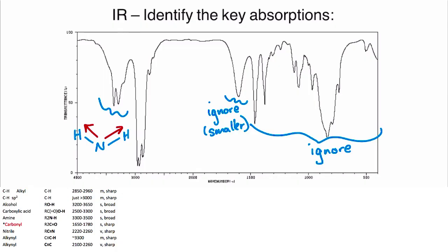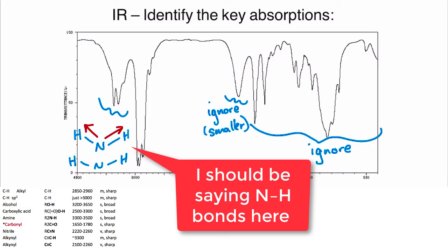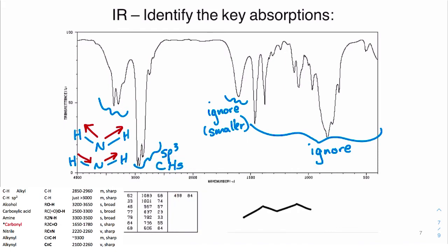We're seeing two different frequencies: one represents the symmetric stretching of the CH bonds, the other represents asymmetric stretching. If we look at the structure, we have a primary amine with those sp3 hybridized CHs, lots of them, and no other functional groups.